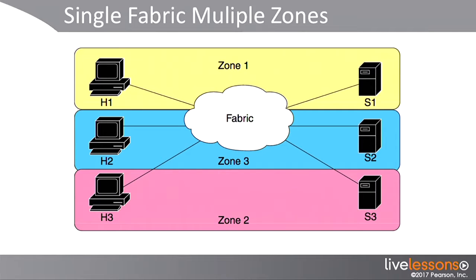Zones are a way to securely divide up a storage area network fabric, where we can say that this initiator or host should talk to this storage device on the network. The reason we do that is for multiple things: A, security; B, because if two hosts access the same storage device or even the same disk on that storage device, then we can have a disk that gets corrupted, and obviously our data integrity is critical in these types of networks.